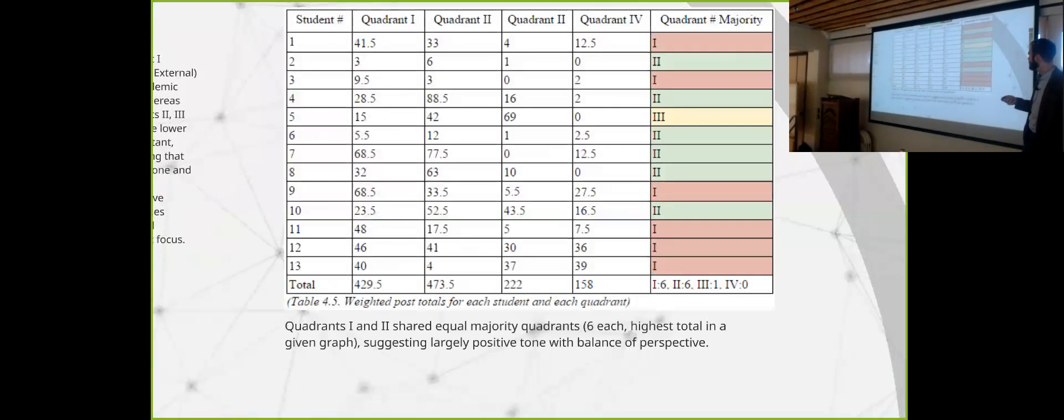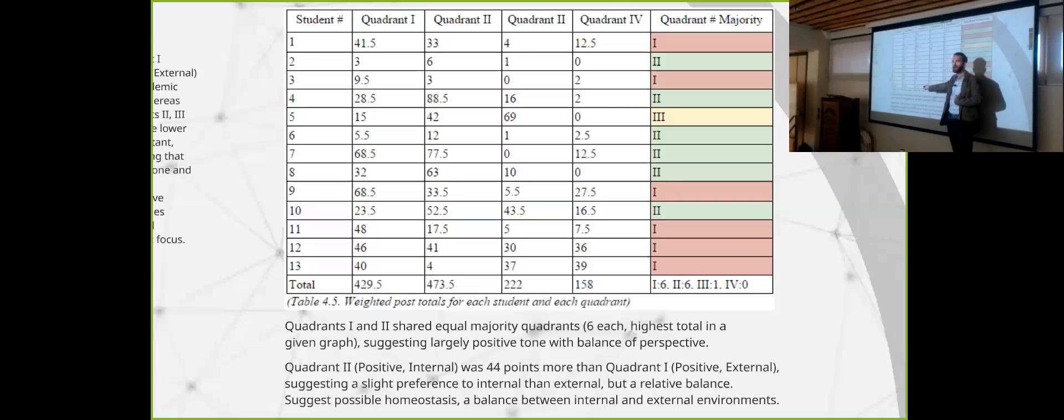Okay. This one will go pretty quick. And so I wanted to see what quadrant majorities there were. Quadrants one and two, which were both positive, but one was external, two was internal. Had a balance. Six each. One student didn't feel very good on the inside. That made me feel sad. But what I noticed is that I tallied up the numbers. And so that's quadrant one, positive, external, in nature of the blog post. This is positive, internal.